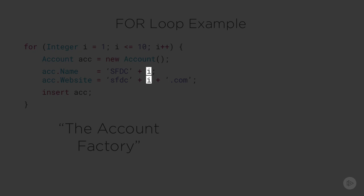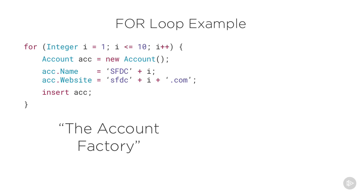Notice inside the loop that the code actually uses i as a variable. We're including i in both the name of the account and in its website. This is helpful because it lets you differentiate the records you're creating, and it could help you bypass any deduplication rules you may have in your org.